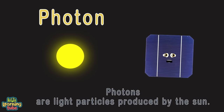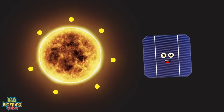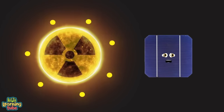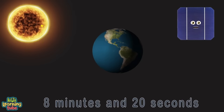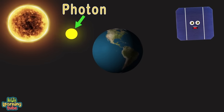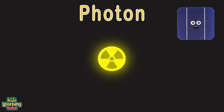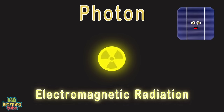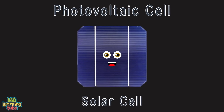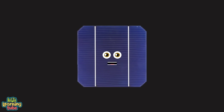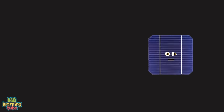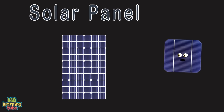Photons are light particles produced by the sun, made by nuclear fusion and shot into space in all directions. It takes 8 minutes and 20 seconds for a photon to reach our Earth from the surface of the sun. Photons are made of electromagnetic radiation — tiny packets of energy. I'm a photovoltaic cell, a solar cell, like an electrical leaf that uses the sun to produce energy. Solar panels are made up of small solar cells made from silicon, a semiconductor and one of the most abundant elements on Earth.